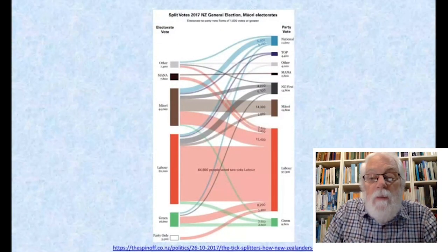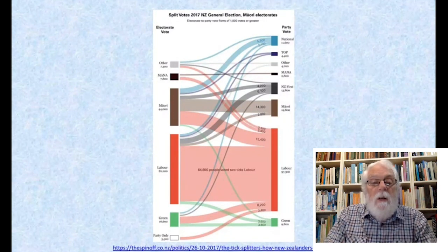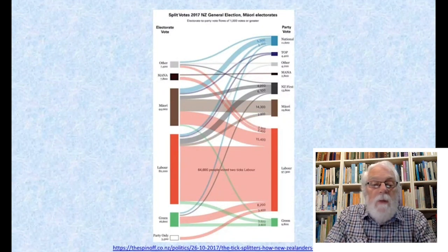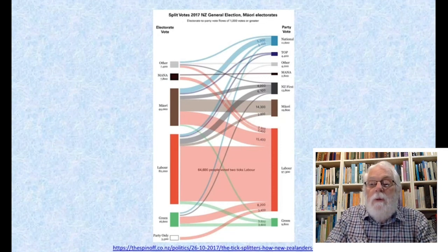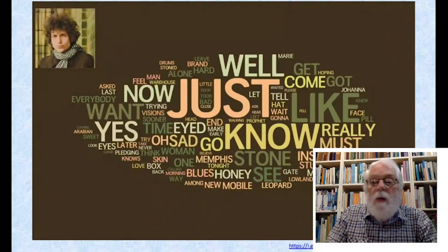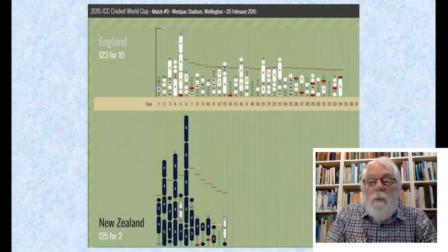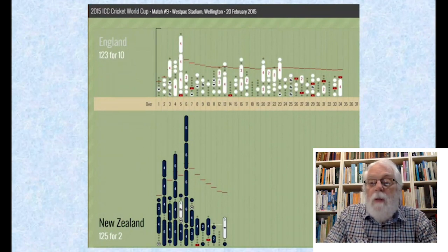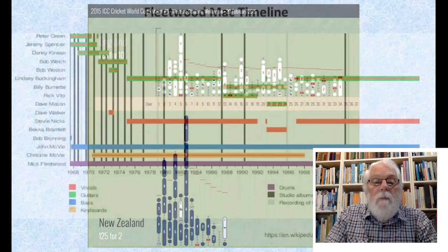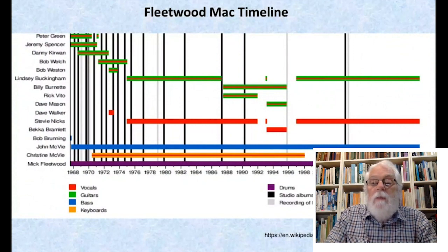Many of the visualizations we see that are computer generated are often static and exploit techniques just like those demonstrated by Meena. Representations like this Sankey diagram showing the difference between electorate and party votes in New Zealand's MMP electoral system, or a word cloud showing the vocabulary and word frequency used by Bob Dylan in his Blonde on Blonde album, or this real-time progress of a sporting event such as the representation of a cricket world cup game between England and New Zealand, or this timeline of the pop group Fleetwood Mac over the 50 years of its existence.